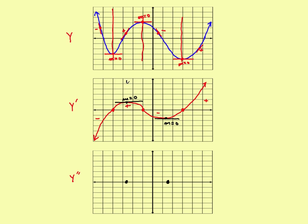That divides things into three intervals. In the first interval, the red graph is increasing — tangent line slopes are positive, so the derivative is above the x-axis, positive in here. In the second interval, the red graph is constantly decreasing — slopes are negative, so the derivative drops below the x-axis and becomes negative. In the third interval, the red graph is constantly increasing — slopes are positive, so the derivative switches back to positive.